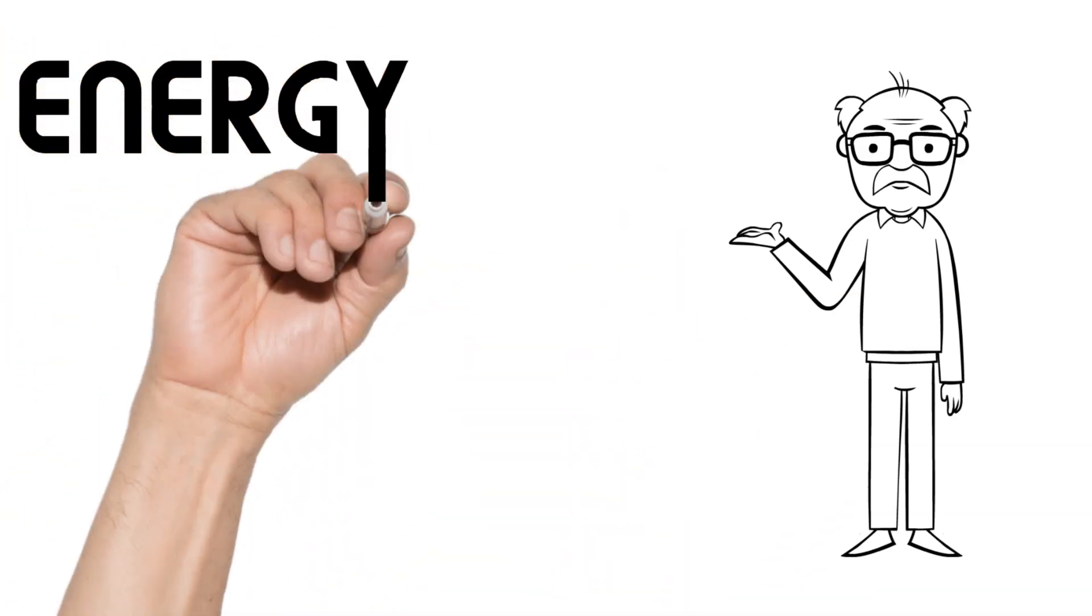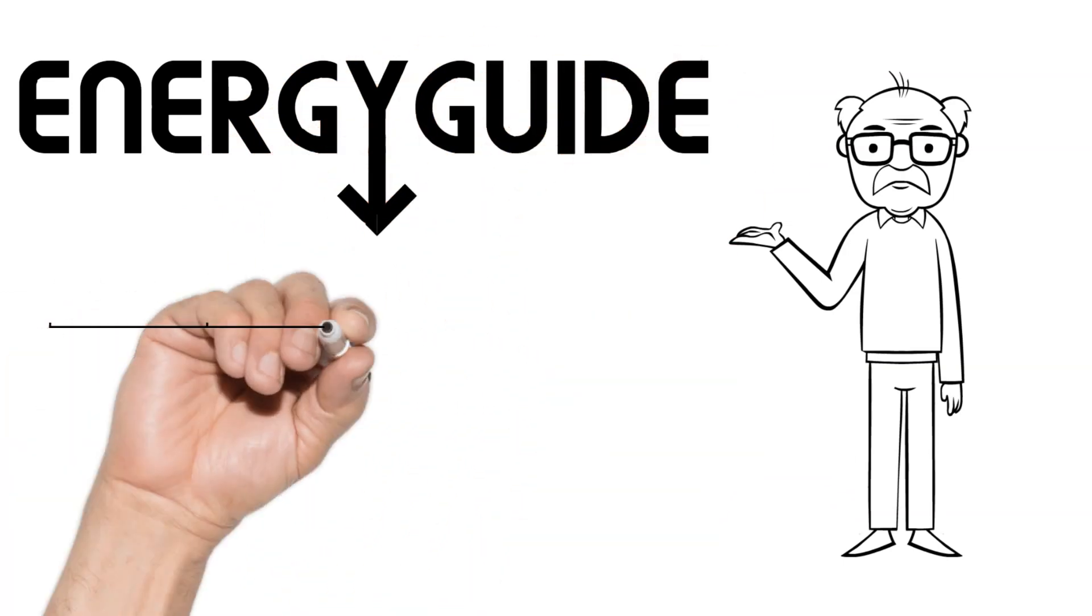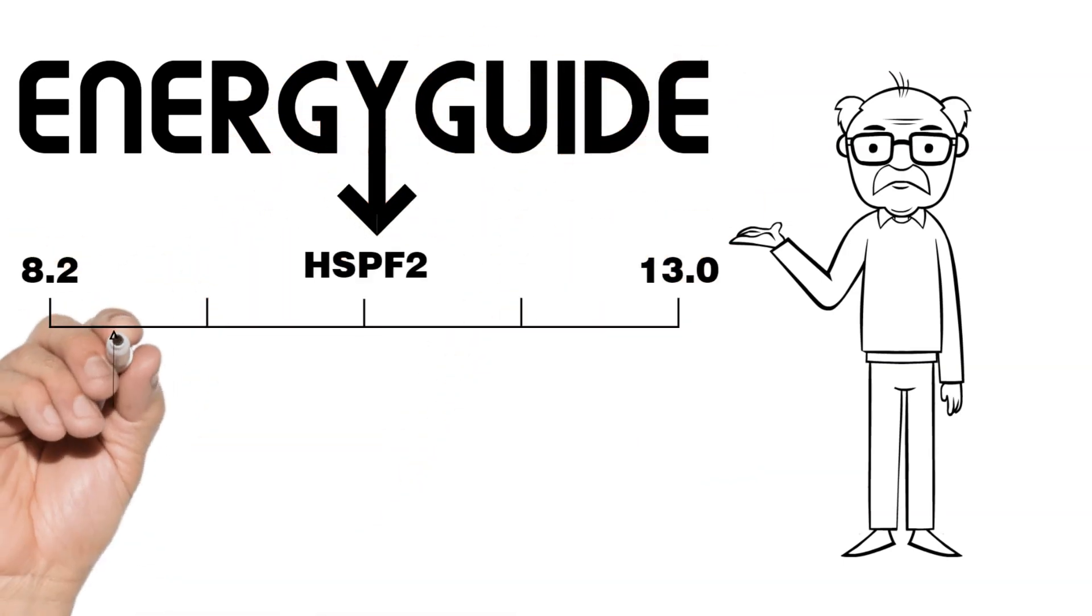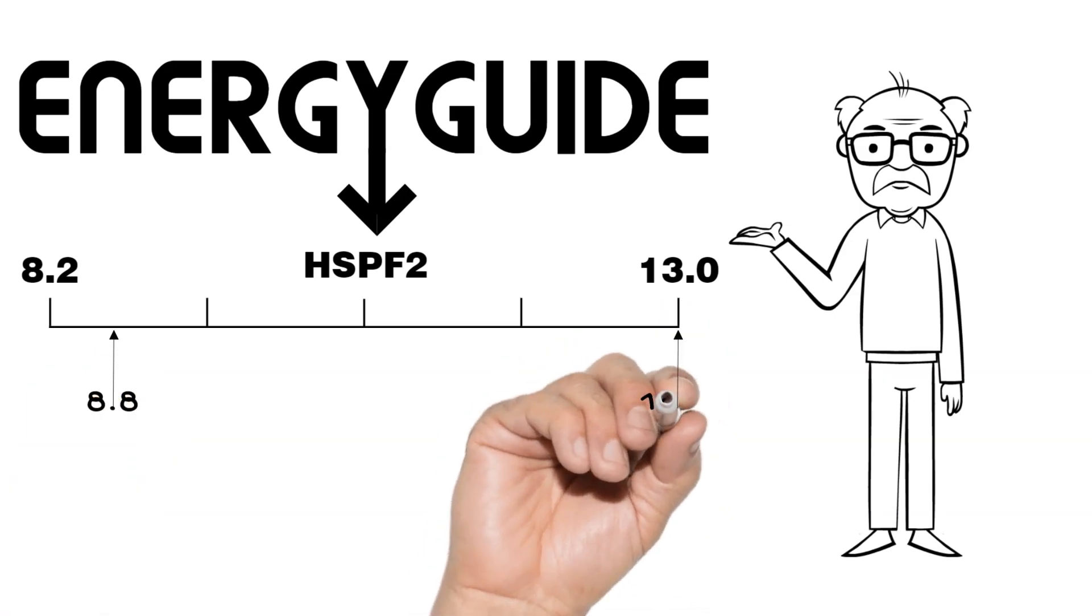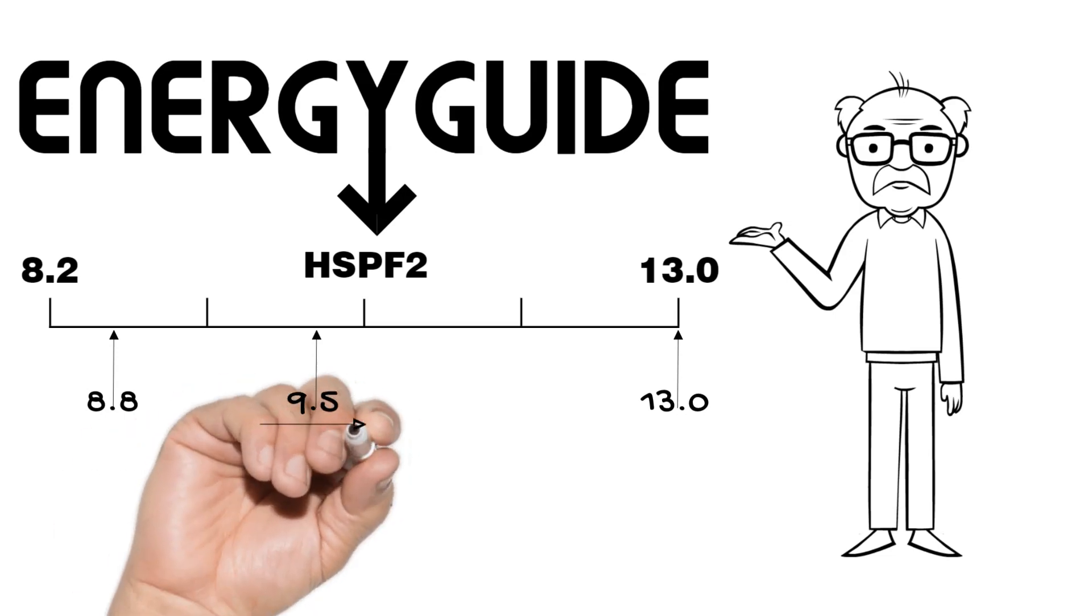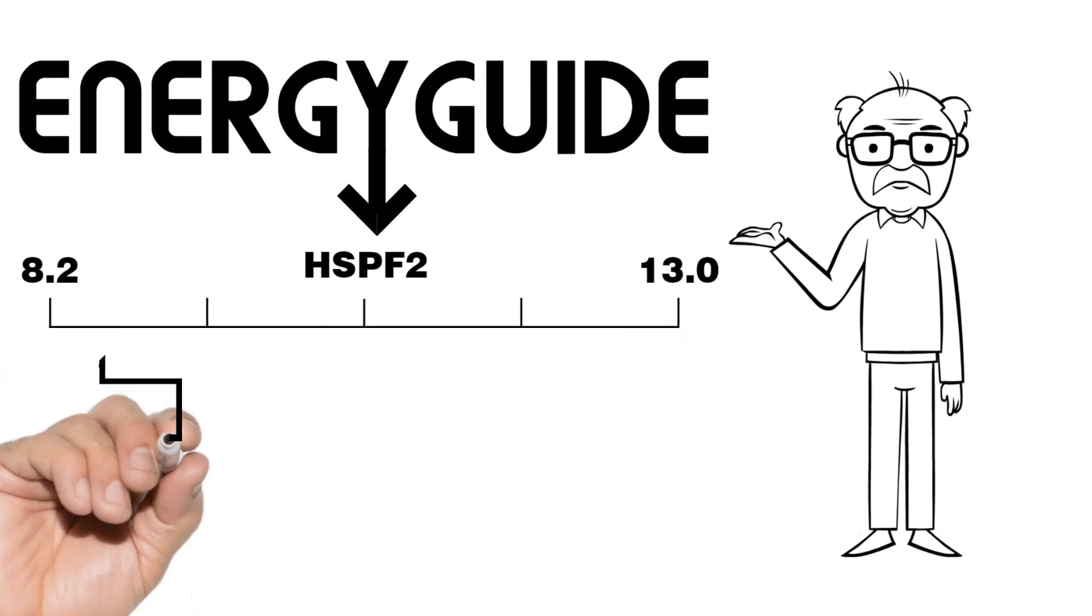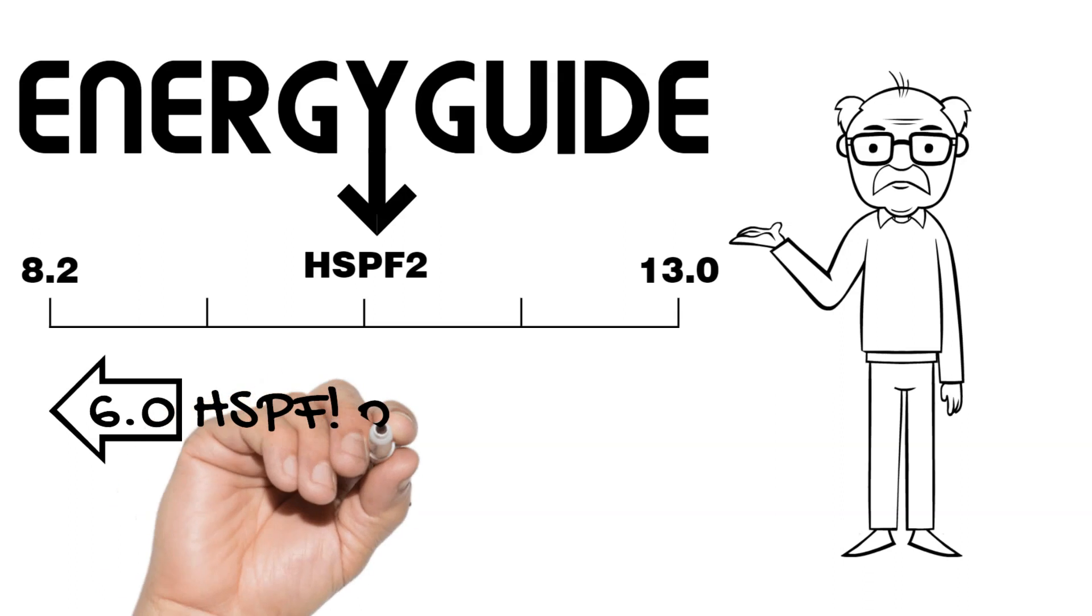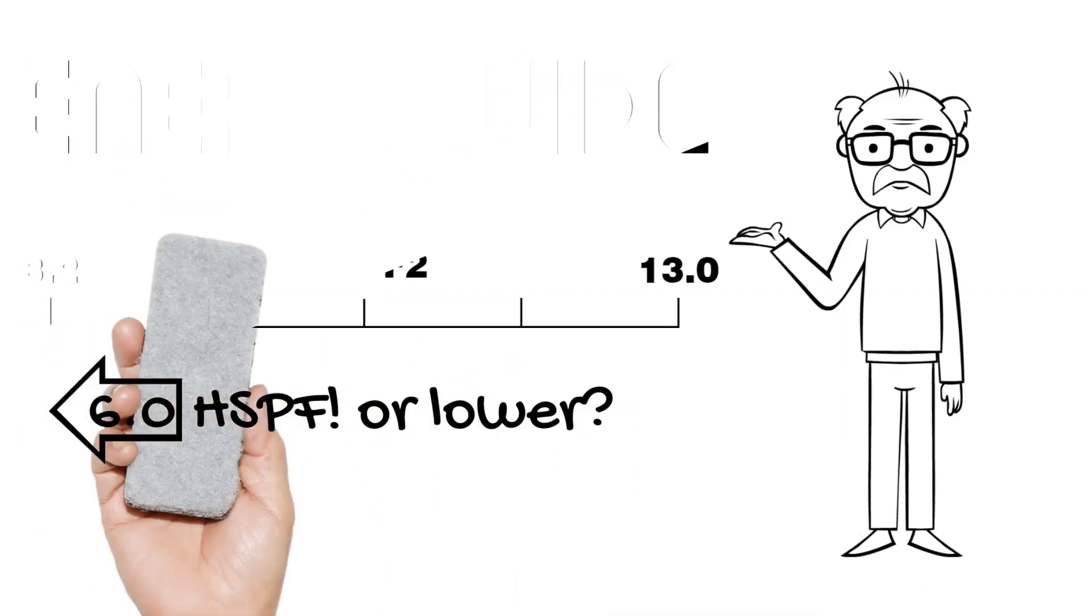HSPF2 values for a typical split system heat pump range from the minimum of 8.8 to as high as 13. Washington state code indicates 9.5 HSPF2 is worth giving incentive toward during new construction. So, we might conclude that 9.5 HSPF or larger is a good value.